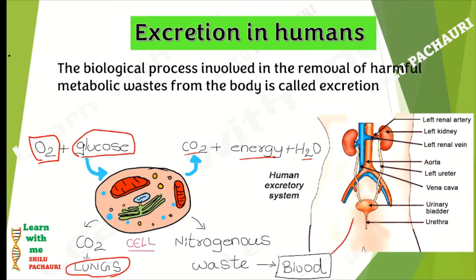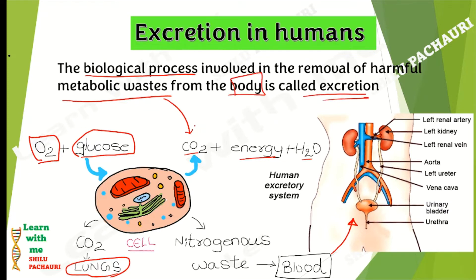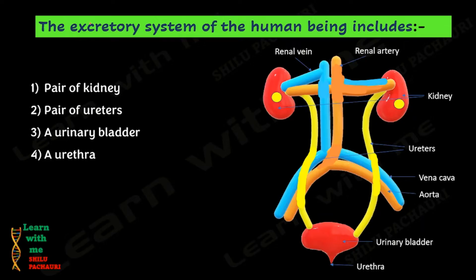This nitrogenous waste is removed from the blood by the excretory system. So excretion can be defined as a biological process in which harmful metabolic waste, produced during metabolic activities, is removed from the body. That process is called excretion. The human excretory system is mainly made up of four components.